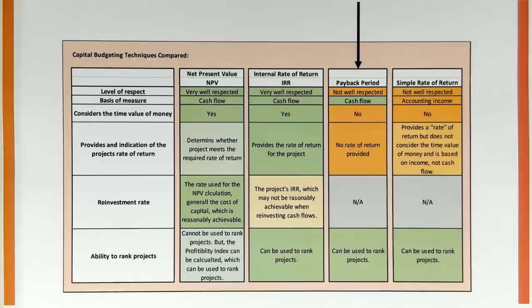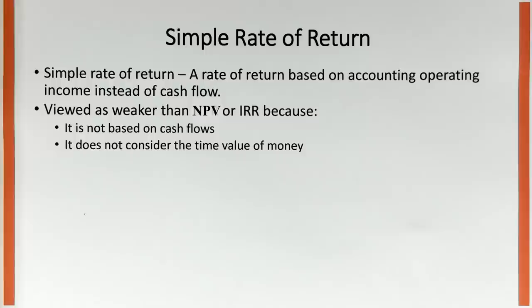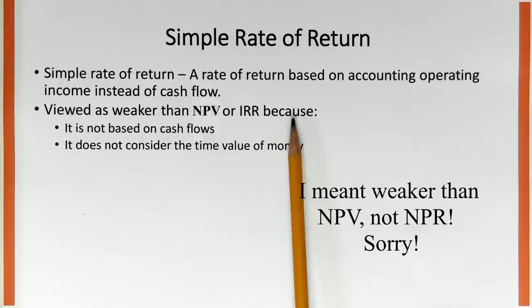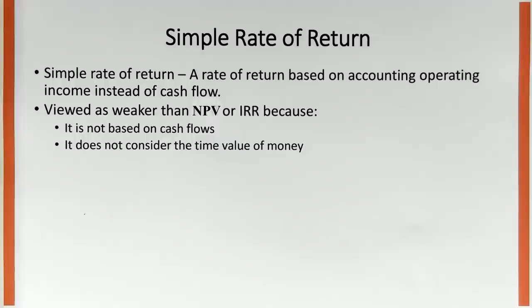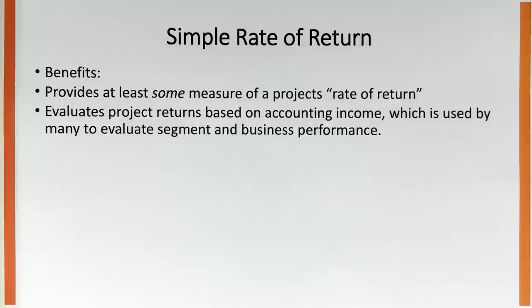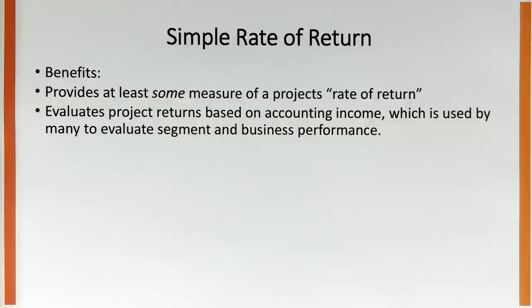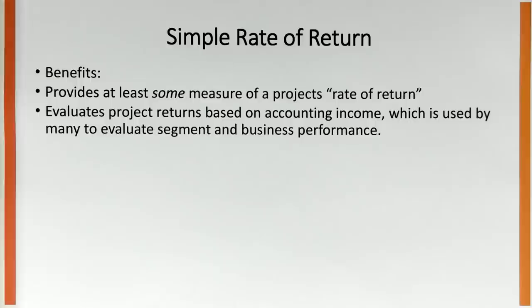The last model is the simple rate of return, sometimes called the accounting rate of return or accrual accounting rate of return. It's a rate of return based on accounting operating income instead of cash flows. It's viewed as weaker than NPV or IRR because it is not based on cash flows, and it does not consider the time value of money — two huge strikes against it. However, it does provide some measure of the project's rate of return, and it uses accounting income.